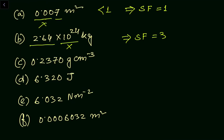In the third part, the zero on the left-hand side means the total value is less than one. The three non-zero digits are significant figures. The zero on the right-hand side is important because it gives the precision of the measurement, so that zero is also significant. The leading zero is not significant. Therefore, significant figures equals four.